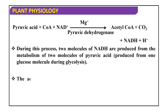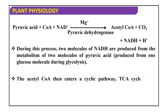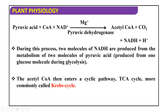During this process, two molecules of NADH are produced from the metabolism of two molecules of pyruvic acid — that is produced from one glucose molecule during glycolysis. The acetyl coenzyme A which is formed during this reaction enters a cyclic pathway.